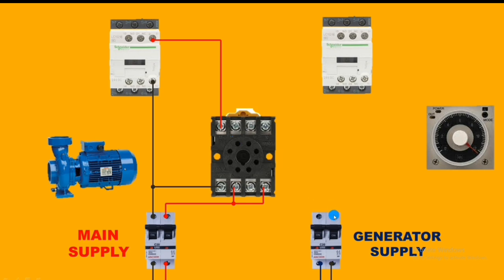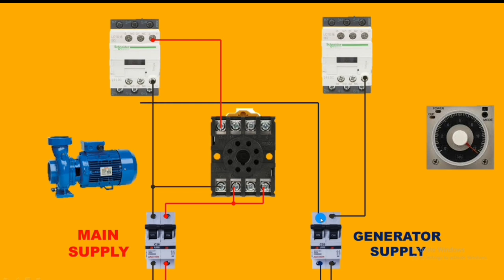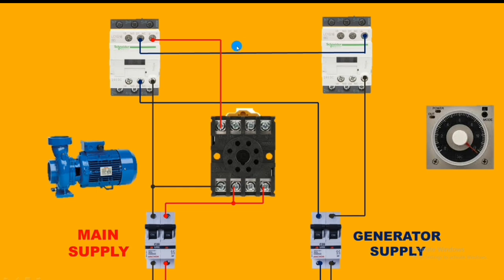Now let's see the connection for the generator power supply. Neutral connects directly to the A2 coil, and the line first connects to the main contactor at the NC point. If the main contactor is in stop condition, this supply will pass. If the main contactor is running, the supply will not pass. If the main power supply is cut, the NC supply connects to the generator contactor A1 coil. So the generator contactor will operate only when the main contactor is in stop condition.